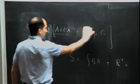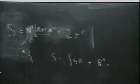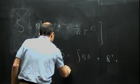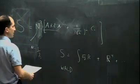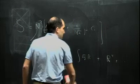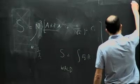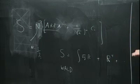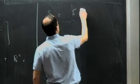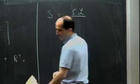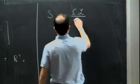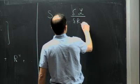For black hole thermodynamics we'll have the same type of corrections. The general formula for a general Lagrangian was derived by Wald. The idea is that the entropy is given by taking the derivative of the Lagrangian with respect to the curvature R_{μνσδ}, and then contracting with the binormal to the horizon, ε_{μνσδ}.